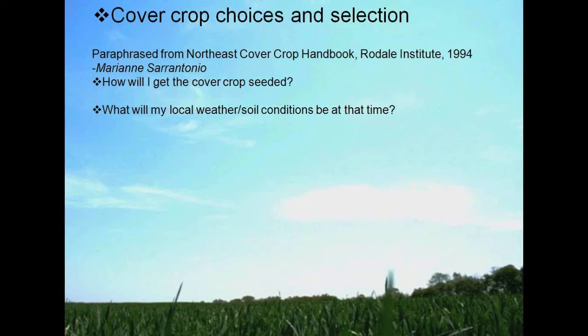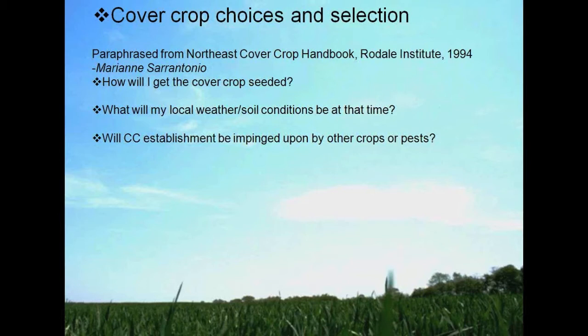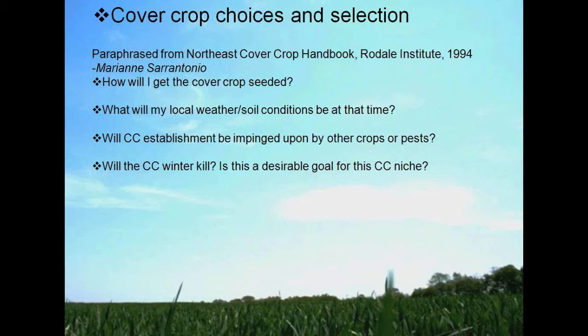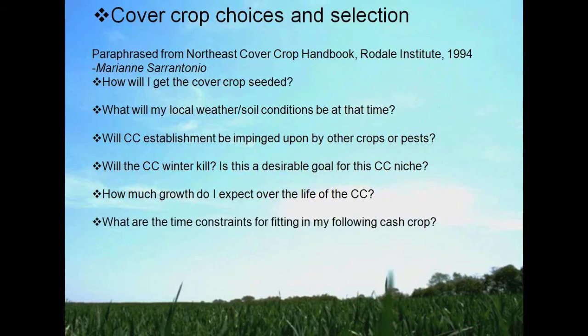Key questions include: How will the cover crop get seeded? What will the local conditions be at the time? Will establishment of the cover crop impinge on other crops or bring pests into the system? Will the cover crop winter kill — and is this desirable for the niche I've identified? How much growth would I expect? What are the time constraints for fitting the following cash crop into the system? And how do I control or kill the cover crop and then plant into it?